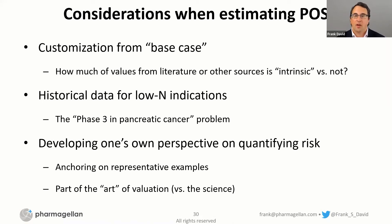How much of the numbers you're seeing — for example, if neurology has a lower phase three probability of success — how much of that is based on intrinsic scientific risk versus just bad things going through the pipeline? Those are important things to wrestle with if you're going to be customizing from the base case: what are the reasons to think that you are better or worse than average? That's worth considering.